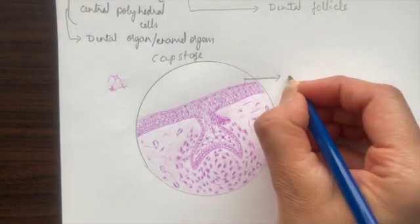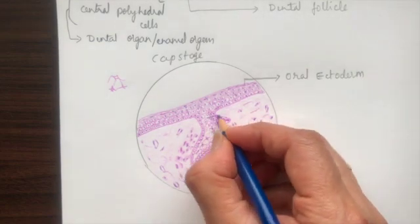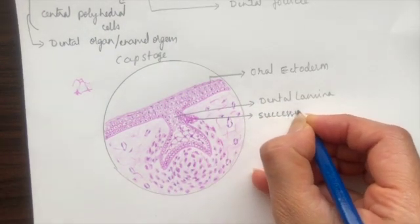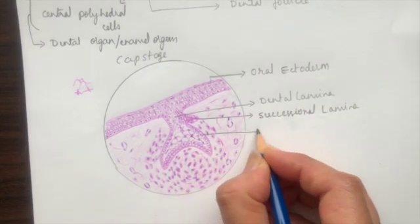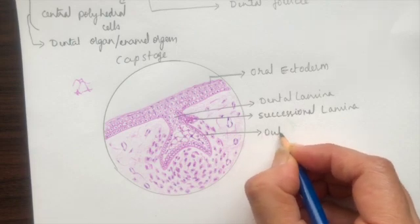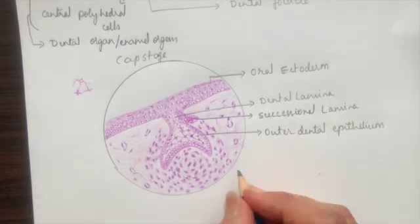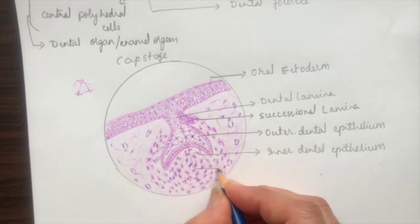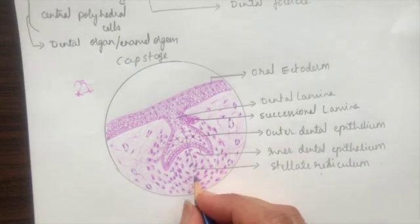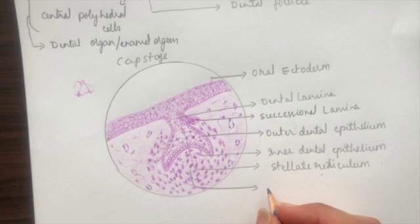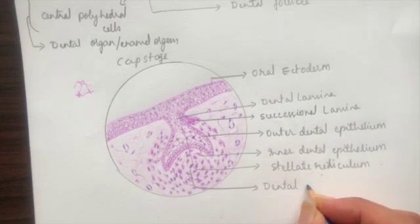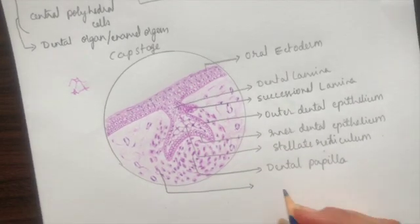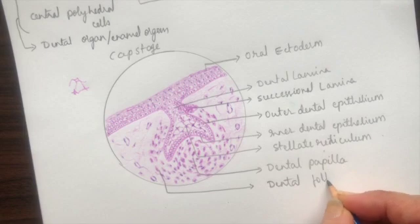The successional dental lamina is part of the enamel organ structures. Now we start labeling: this is the oral ectoderm, this is the primary dental lamina, this is the successional lamina. These are the enamel organ parts — outer dental epithelial cells and inner dental epithelium — and these are the stellate reticulum cells. The central condensed ectomesenchyme is the dental papilla or dental papillary cells.